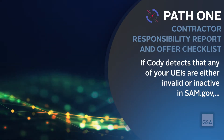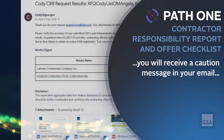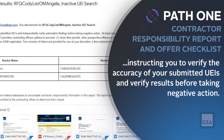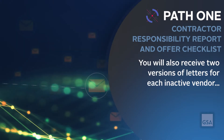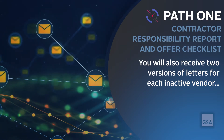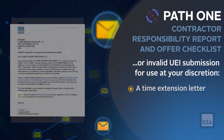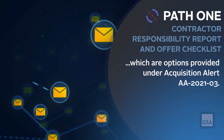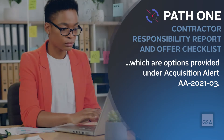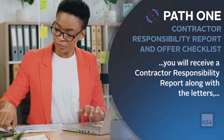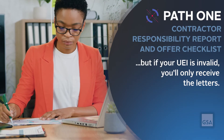If Kodi detects that any of your UEIs are either invalid or inactive in SAM.gov, you will receive a caution message in your email instructing you to verify the accuracy of your submitted UEIs and verify results before taking negative action. You will also receive two versions of letters for each inactive vendor or invalid UEI submission for use at your discretion: a time extension letter and an award ineligibility letter, which are options provided under Acquisition Alert AA-2021-03. If your vendor is inactive, you'll receive a contractor responsibility report along with the letters, but if your UEI is invalid, you'll only receive the letters.